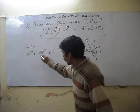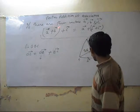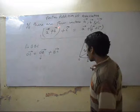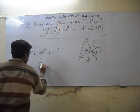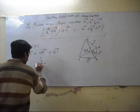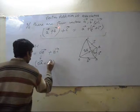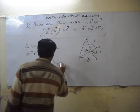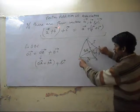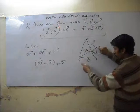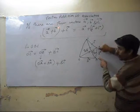When we expand OB vector, OB vector will equal OA vector plus AB vector plus BC vector. This side, OB vector will always equal OA vector and AB vector.